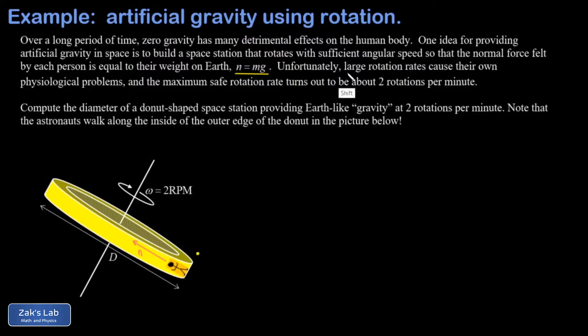One of the constraints of this problem is that large rotation rates can cause their own problems. There are some interesting issues with coordination that happen because of the Coriolis effect, and problems with vertigo.